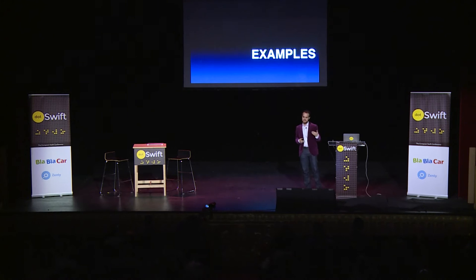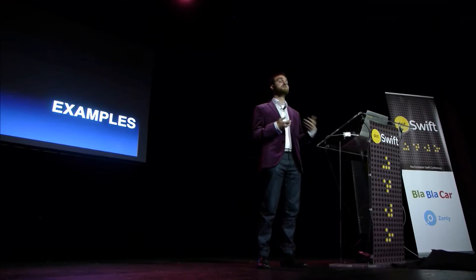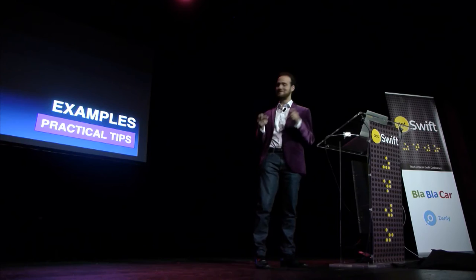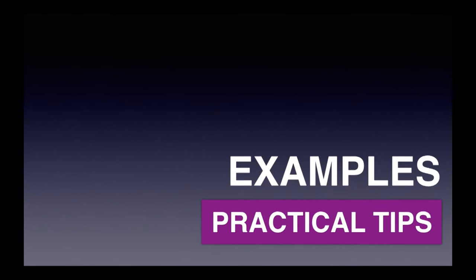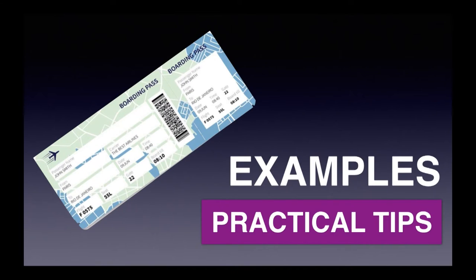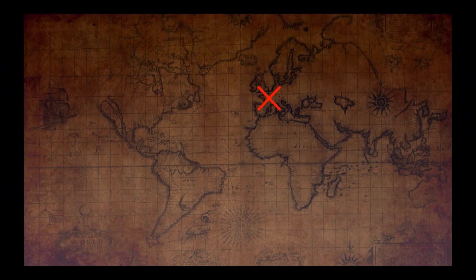I'm going to give you some examples of where we need to do more, and some practical tips — which will come in purple boxes — of things you can do to really improve localization in your Swift code. The way we're going to do that is by taking a boarding pass and going on a small trip around the world to various places that do things a little differently. We're actually going to start with a problem many people in the audience would know, beginning here in Paris.